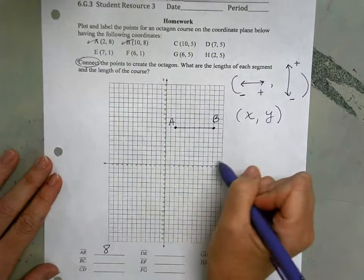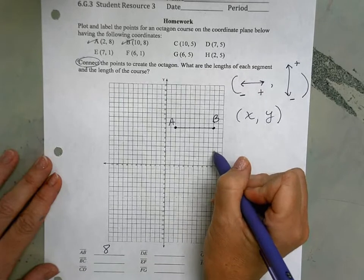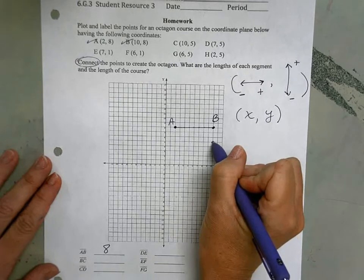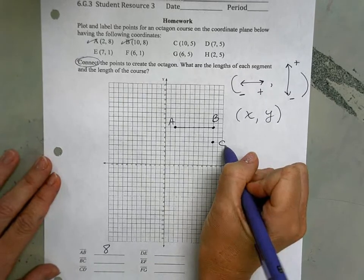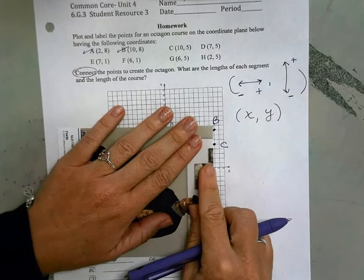I'm going over 10, and then up 5. 1, 2, 3, 4, 5. So I'll plot it. I'll label it C. And I'll use my straight edge to connect.